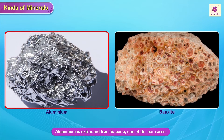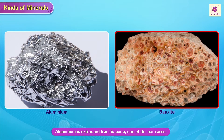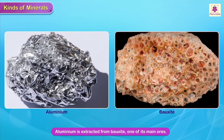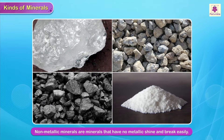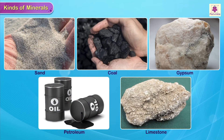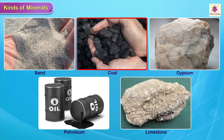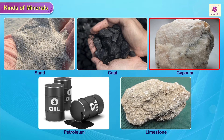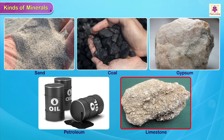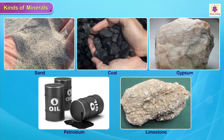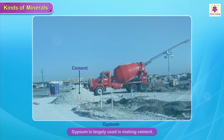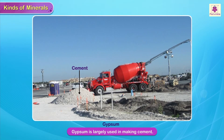Aluminium is extracted from bauxite, one of its main ores. Non-metallic minerals are minerals that have no metallic shine and break easily. These include sand, coal, gypsum, petroleum, limestone, etc. Gypsum is largely used in making cement.